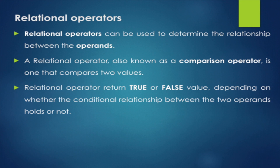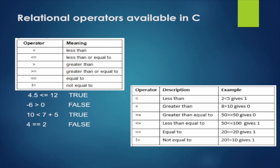A relational operator is used to determine the relationship between operands, and is also known as the comparison operator. It returns true or false depending on whether the conditional relationship between two operands holds. True means value 1 and false means value 0. For example, if x is less than y, it gives true — that means 1; if x is greater than y, it gives false — that means 0. I have shown all relational operators in a tabular format.